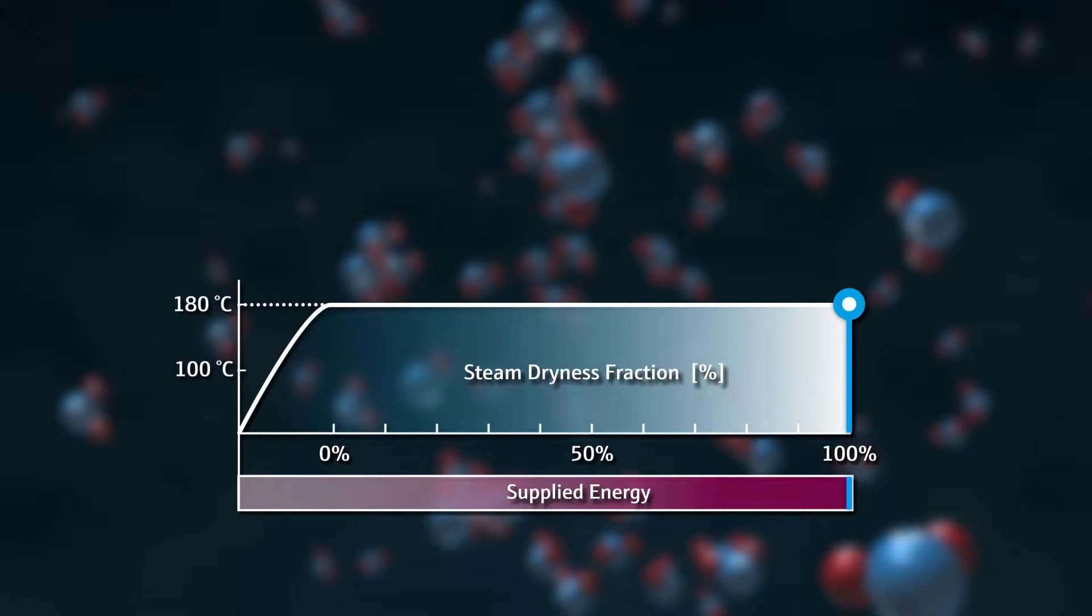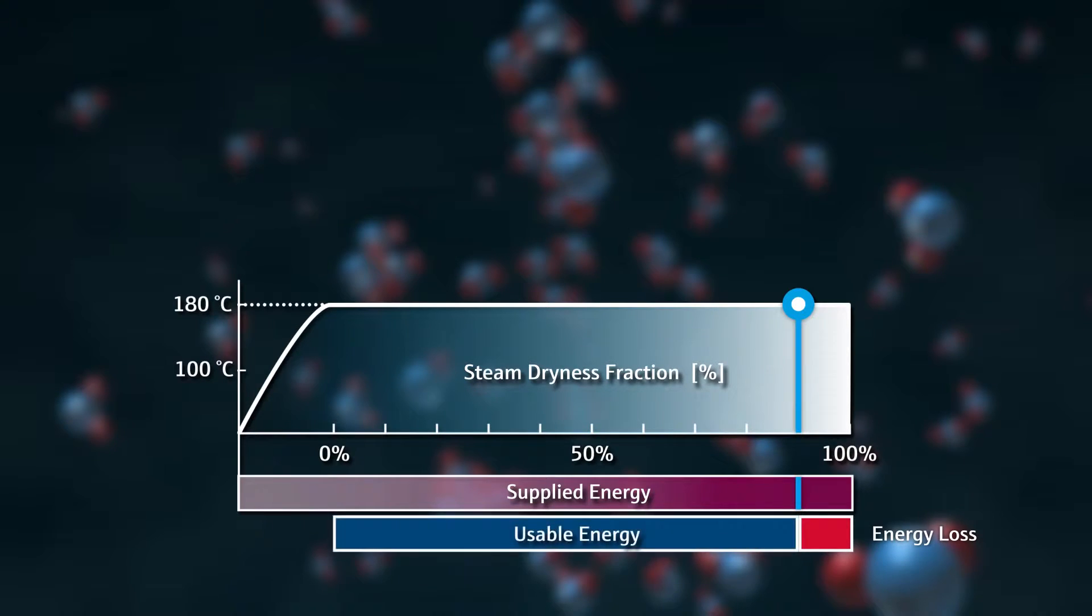The dryness fraction of the steam thus determines the energy content directly usable. If, for example, steam is only 90% dry, in other words contains 10% liquid water or condensate, then its usable energy amounts to only 90% and has therefore less value.